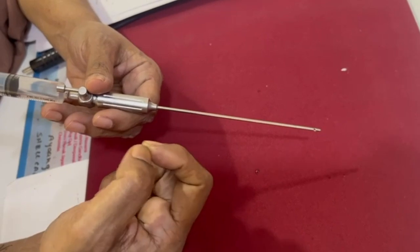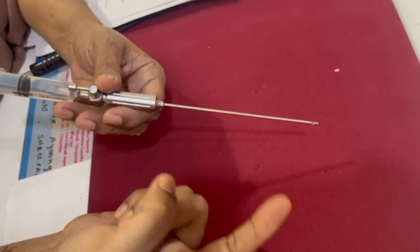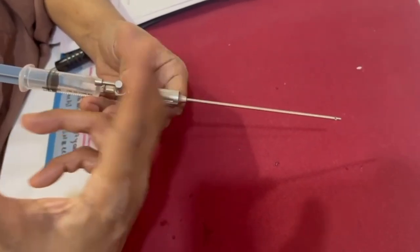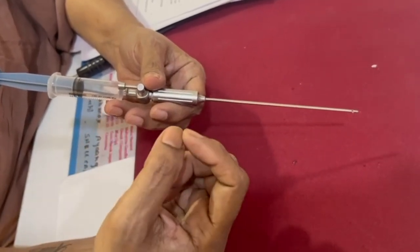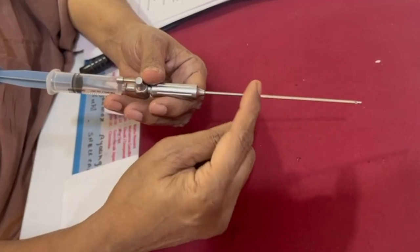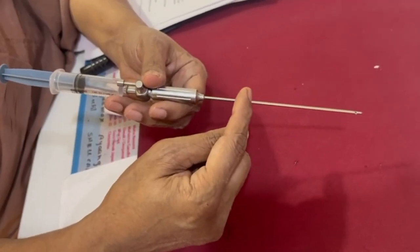Suppose you aspirate blood, that means you have injured a vessel. Suppose you aspirate yellowish fluid, that means you have perforated the bowel. That's the importance of the aspiration test.